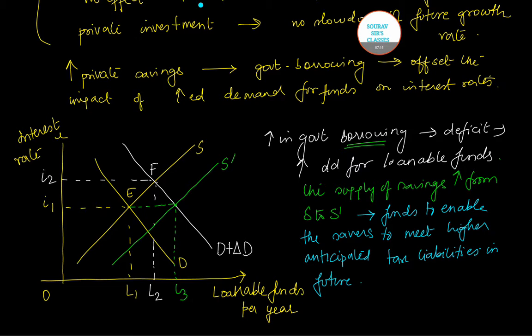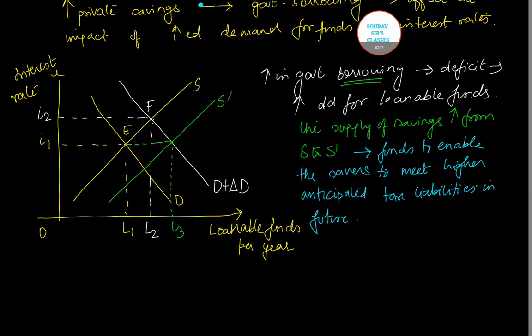Okay, now what we see is that the increase in supply of loanable funds results in a new equilibrium. And let us call this equilibrium as G.